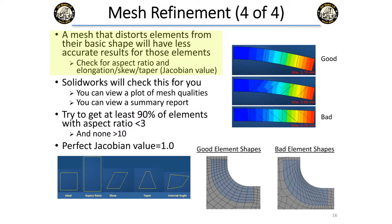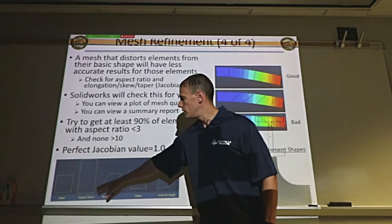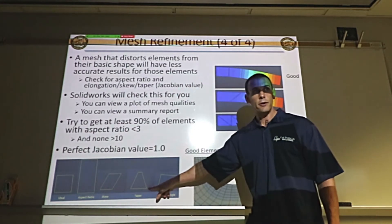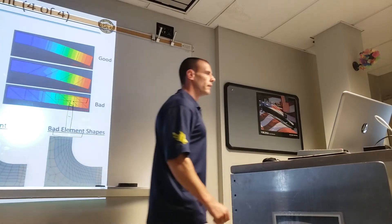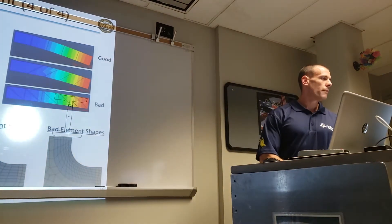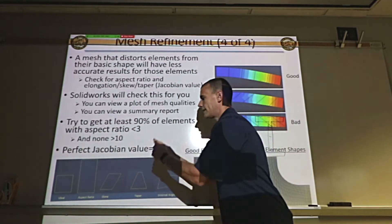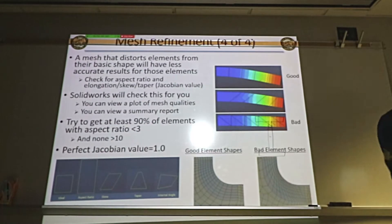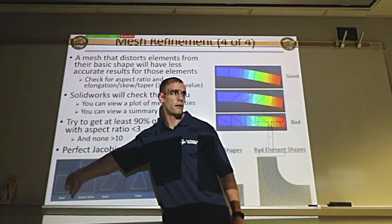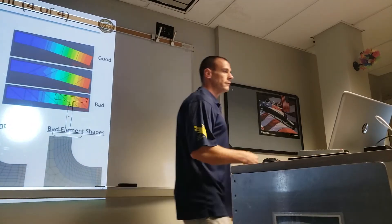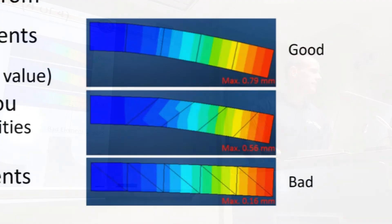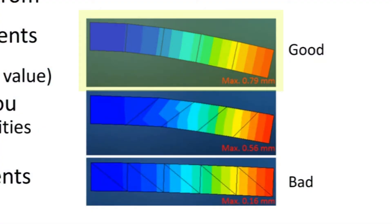If a mesh is distorted — if the elements deviate from their ideal shape — you're going to get less accurate results. If you have a weird aspect ratio, skewing, tapering, or bad internal angles, it will give improper results. In an extreme case, if an element tapers so much it becomes essentially a triangle, it artificially stiffens your structure. When the element is rectangular there's no shear support issue, but if it becomes a triangle the model thinks your structure is stiffer than it actually is.